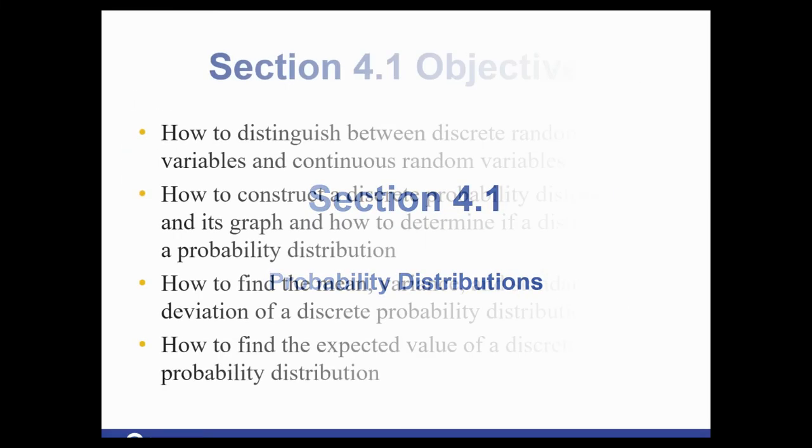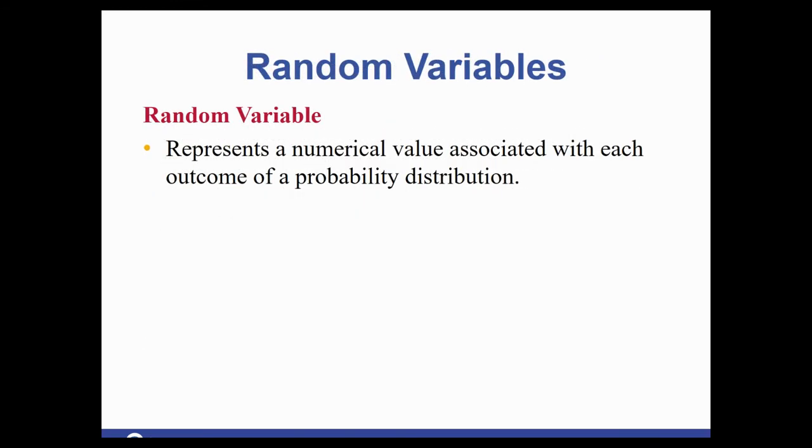Probability distribution. So the first thing we need to define is a random variable. A random variable represents a numerical value associated with each outcome of a probability distribution.